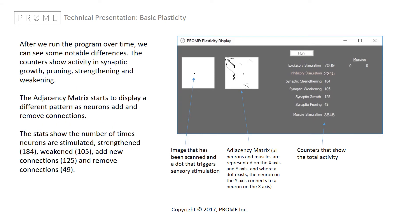After the program has run for a length of time, we can see quite well that network alterations begin to show. The adjacency matrix is much different than when we started, and the counters display a lot of activity within our simple connectome.